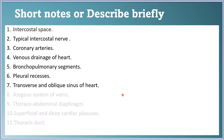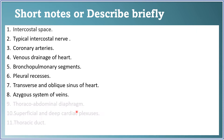Pleural recesses — both the costo-mediastinal and costo-diaphragmatic recesses and their applied anatomy — are very important. Transverse and oblique sinuses of the heart: these spaces are created by the reflection of the pericardium, and the clinical significance must be written. The azygous system of veins: write about the azygous vein, hemiazygous, and accessory azygous vein, the areas drained, and how the azygous vein drains into the superior vena cava.